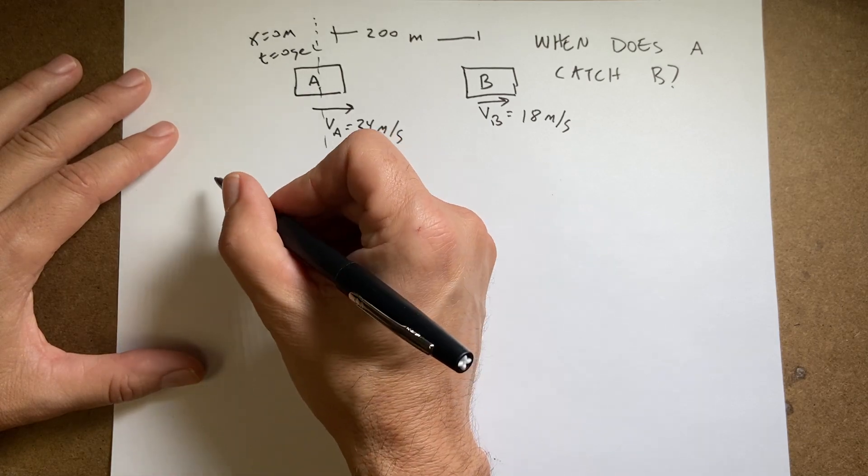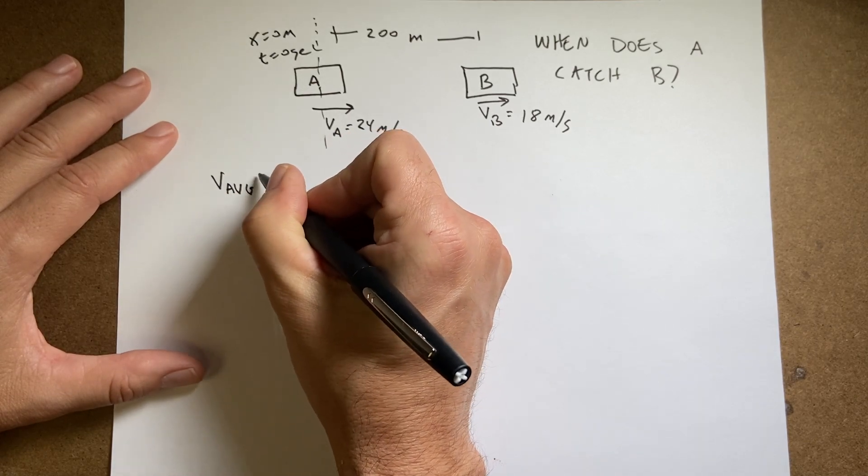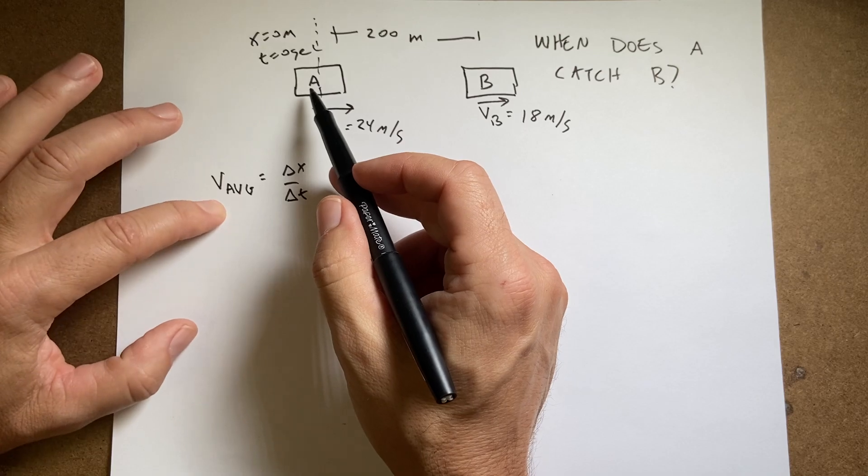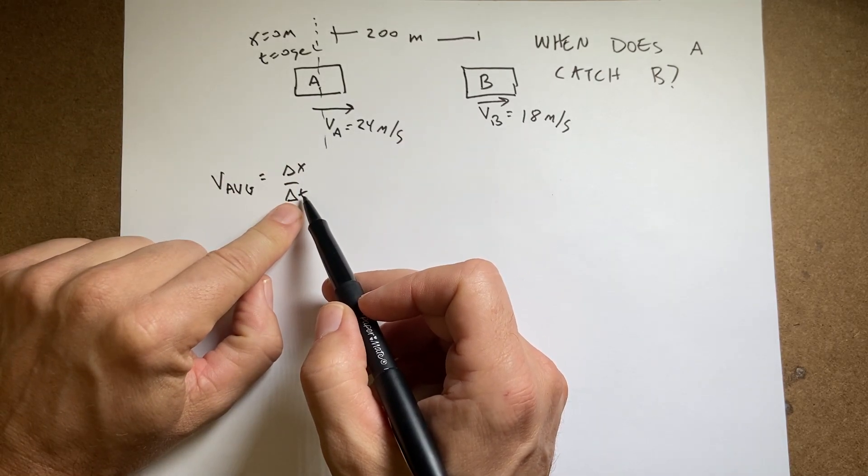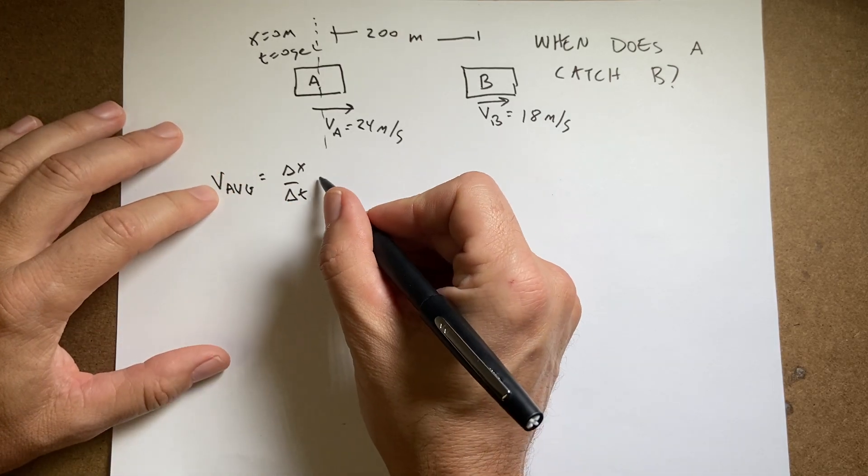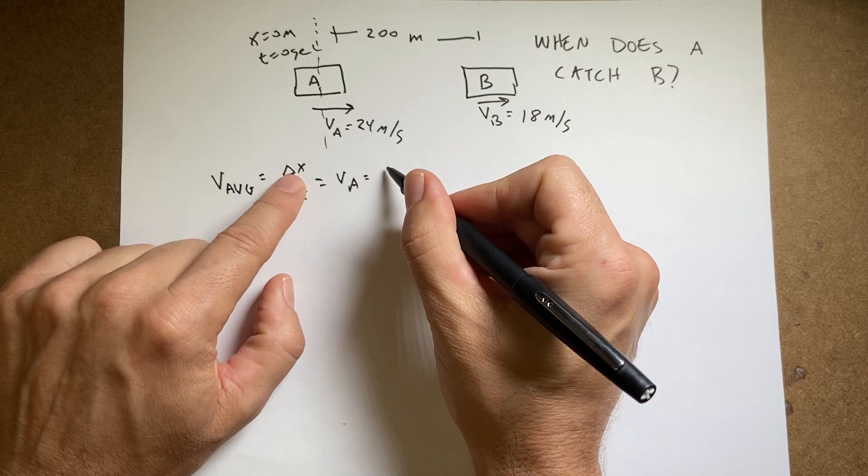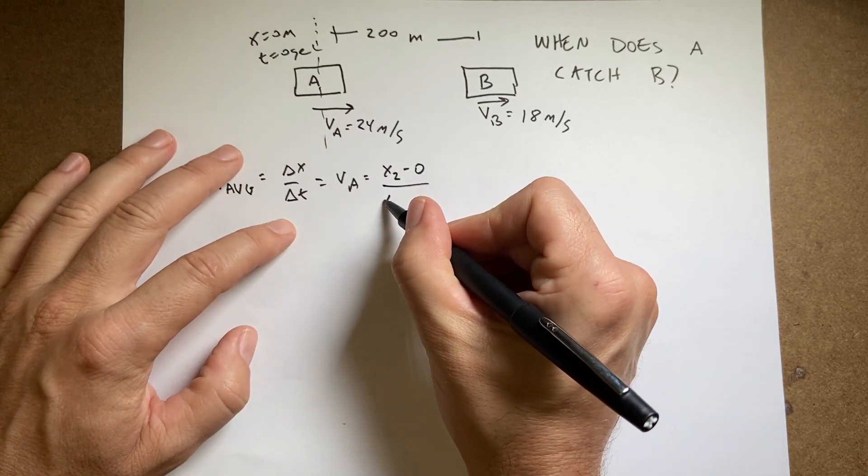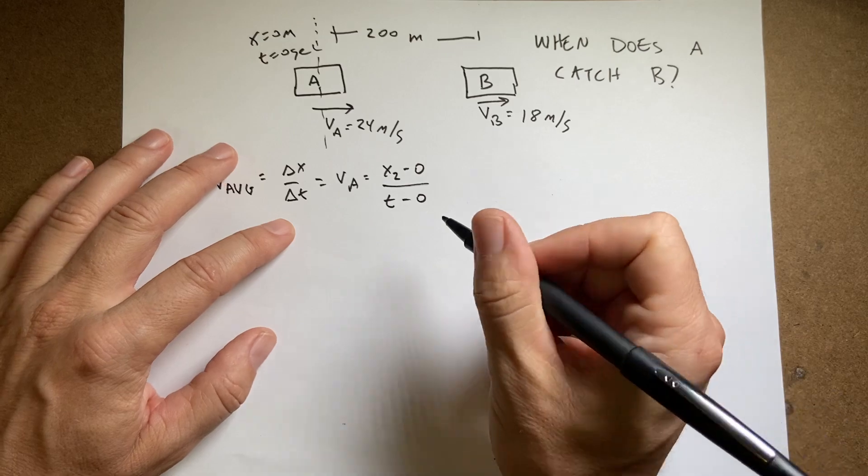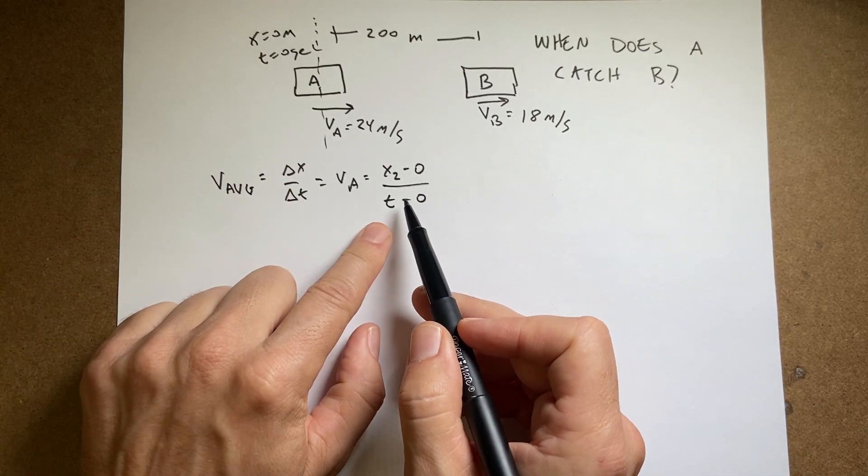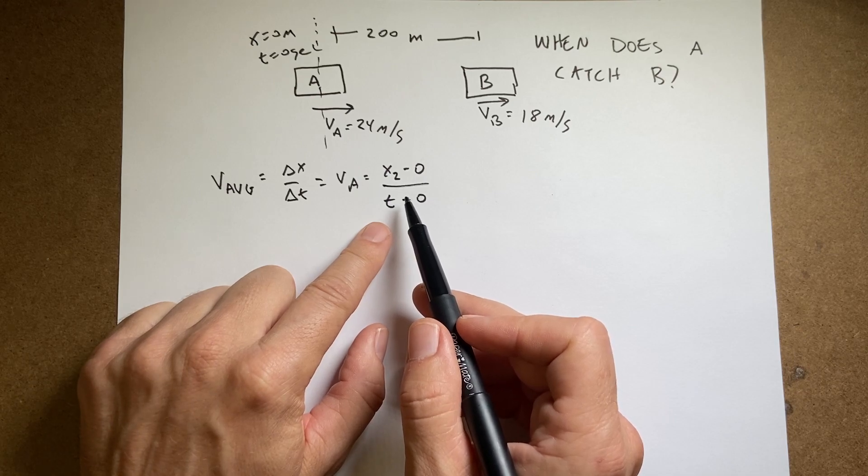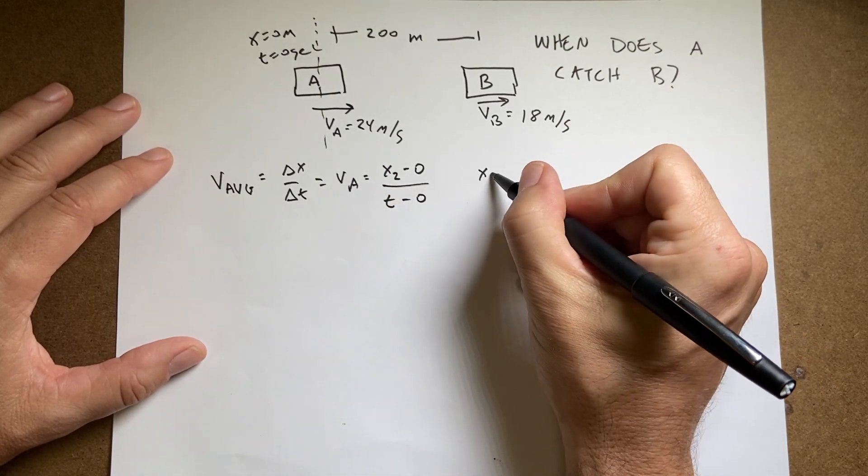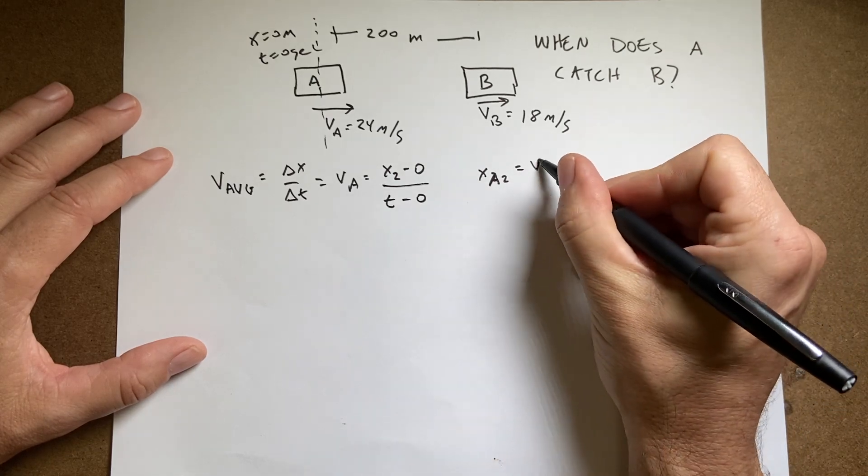So let's look at the definition of average velocity. The average in x direction, this is one dimensional, is a change in position over the change in time. If I know the average velocity, so I know the average velocity of car A is going to be VA, and that's going to be the final x, I'll call it x2, minus the initial x of zero, over the final time, which I'll just call t, minus the initial time of zero. So now I can solve for x and I get x2, I get xA2 is going to be equal to VAT.